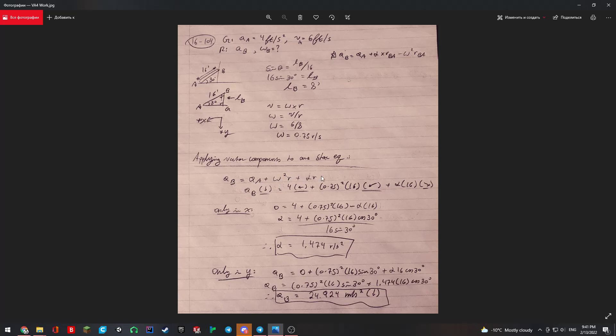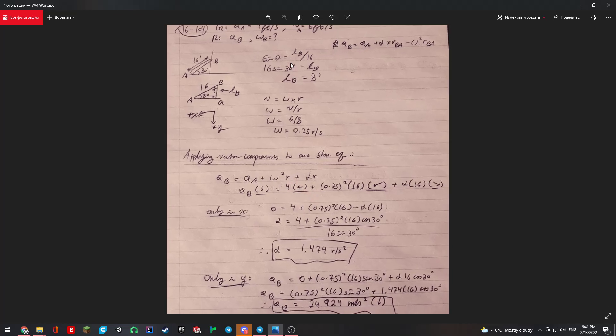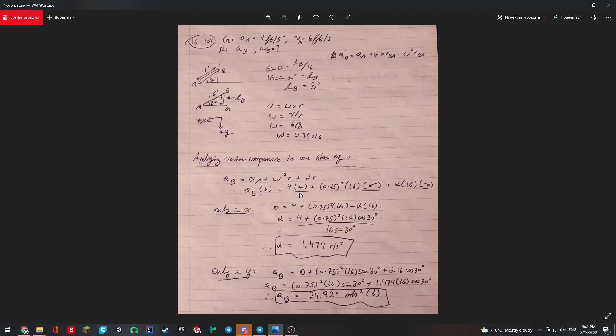We can add all of our directions. We know that AB is going down, we know that AA is going to the left, which in our coordinate system I stated that to the left is positive X, positive i, and going down is positive j, positive Y.